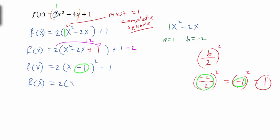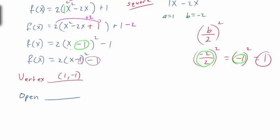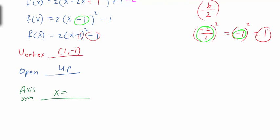So our standard form is f(x) = 2(x - 1)² - 1. From this we can easily find the vertex: using h = 1 and k = -1, the vertex is (1, -1). The 'a' value is positive 2, so the parabola opens up. The axis of symmetry is x = 1.